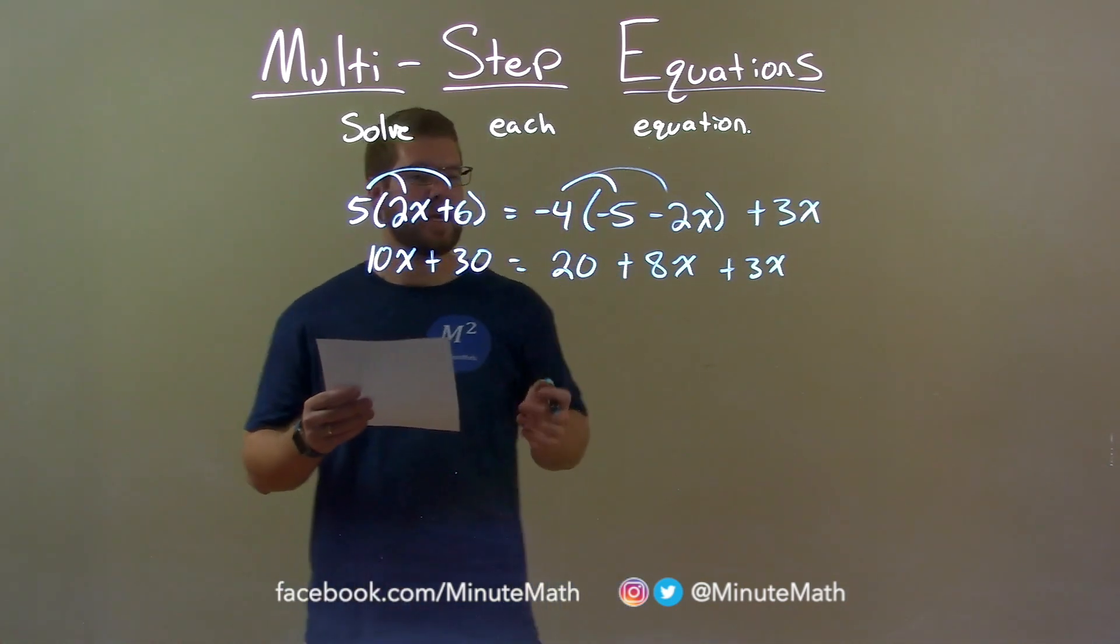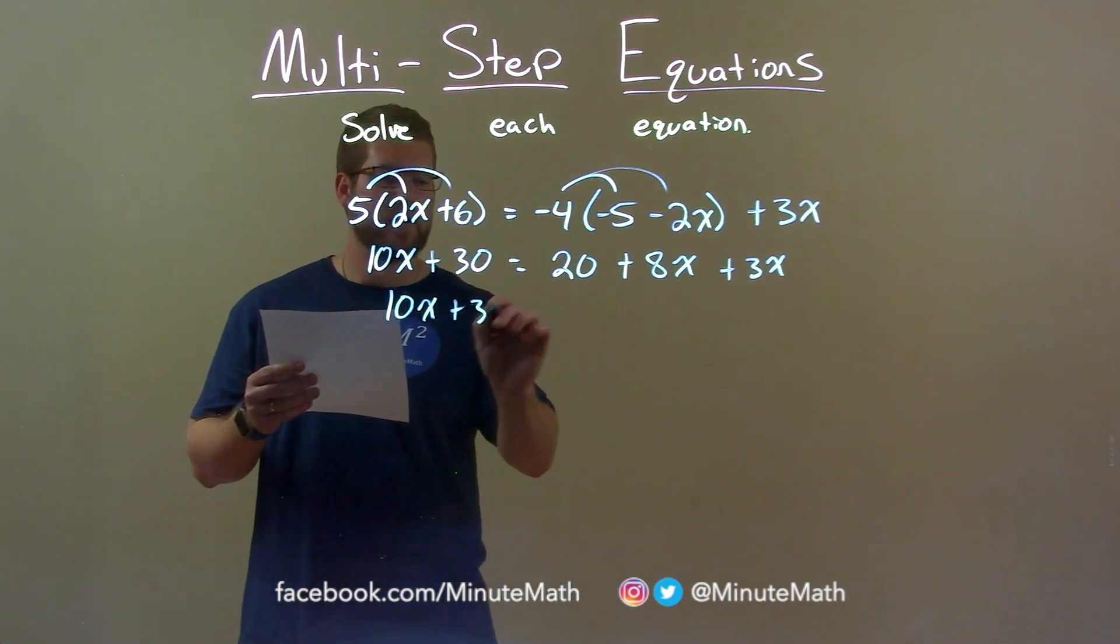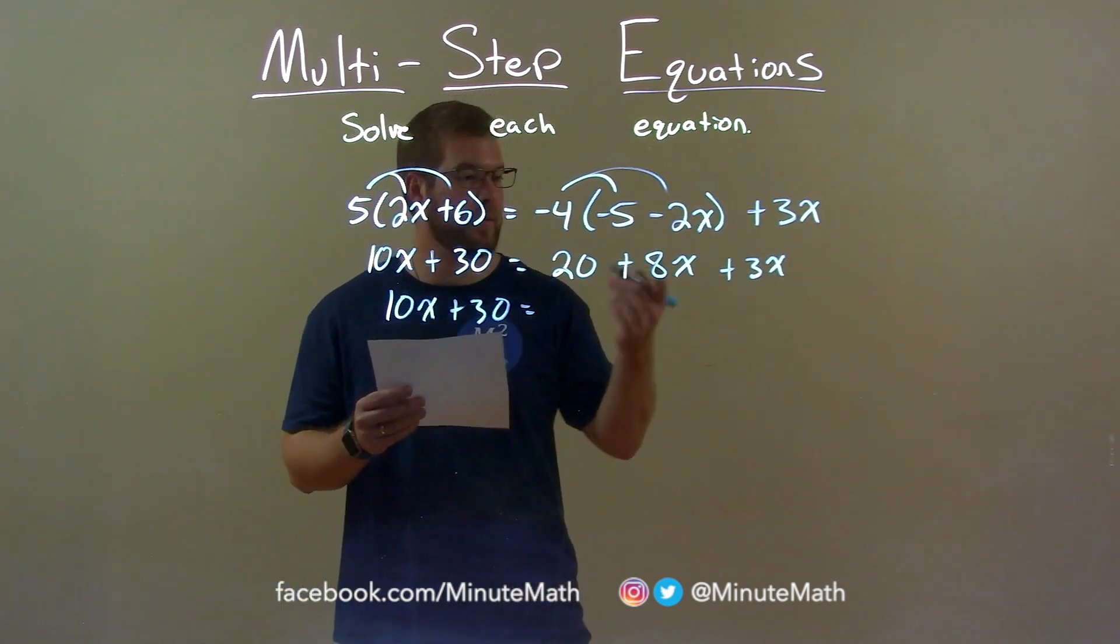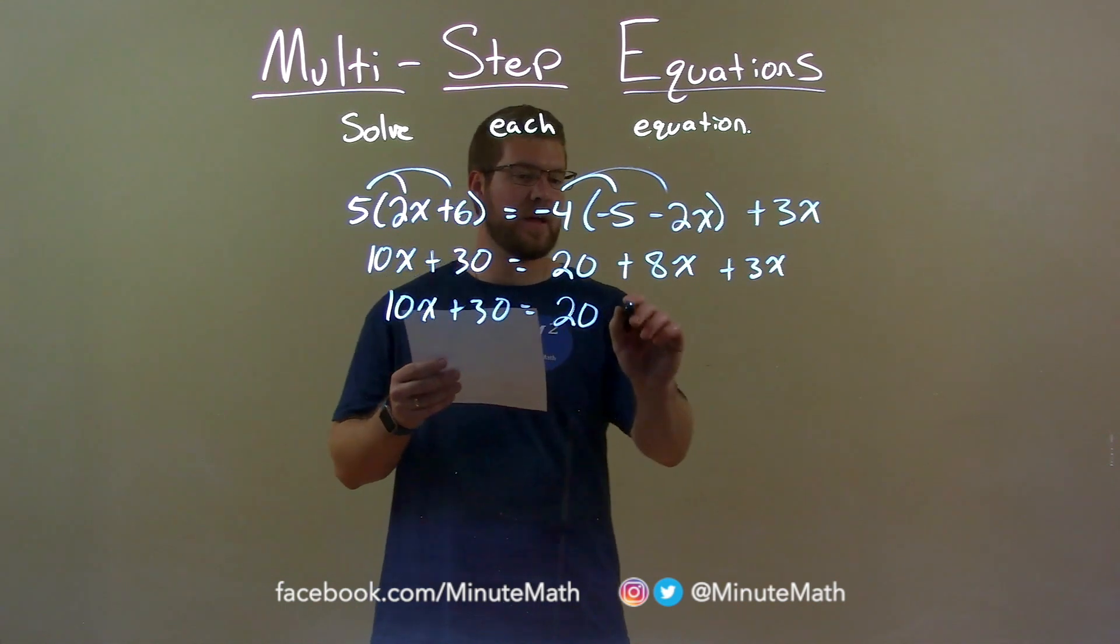Let's combine our like terms on each side. On the left, nothing to combine, so we have 10x plus 30. On the right, we can combine the x's. So we have 20 here plus 8x plus 3x is 11x.